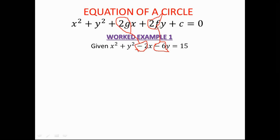So g equals negative 1 and f equals negative 3. Now remember that these values represent the coordinates of the center of the circle — but you have to substitute them into the center formula, which is negative g to negative f.